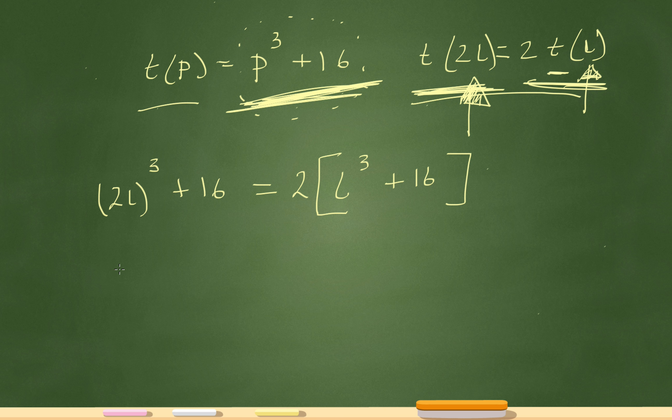So 2l cubed will be, it won't be 2l cubed. The final answer here should be 2l times 2l times 2l, which will actually be 8l cubed plus 16 equals 2l cubed plus 32. But this is getting distributed here and there.